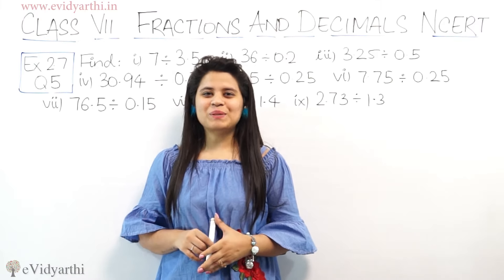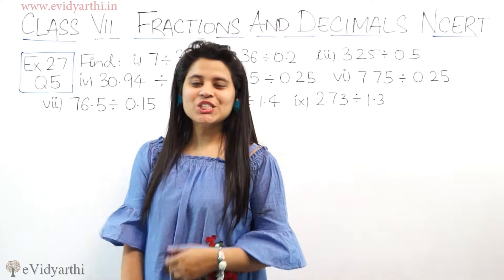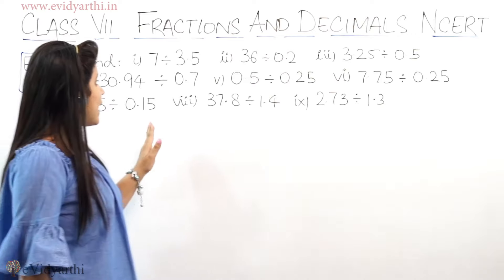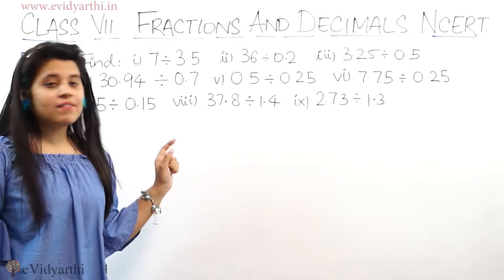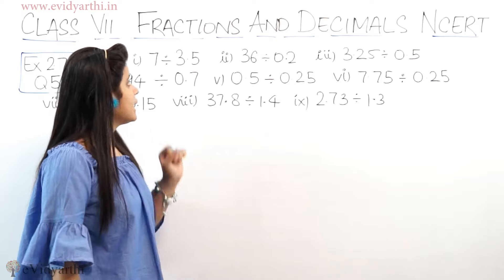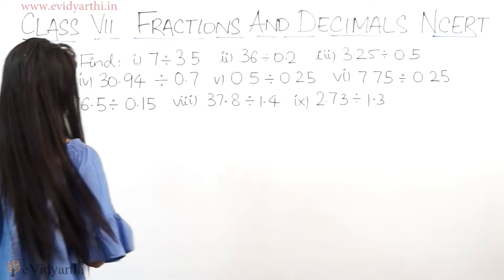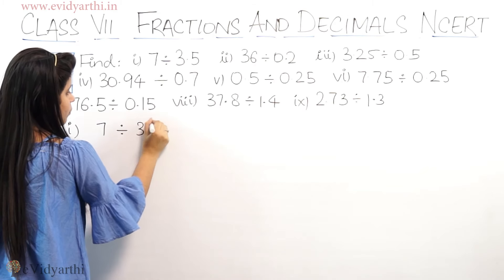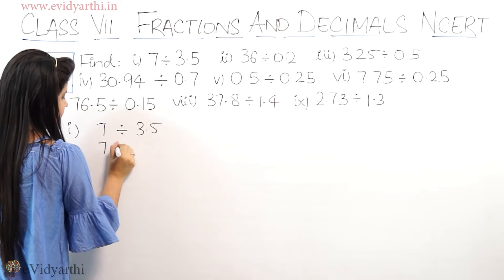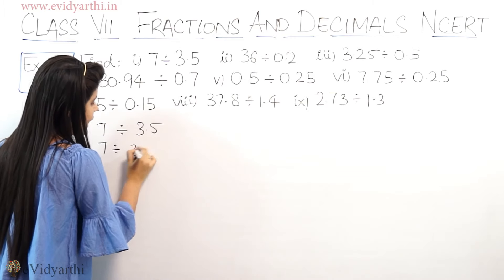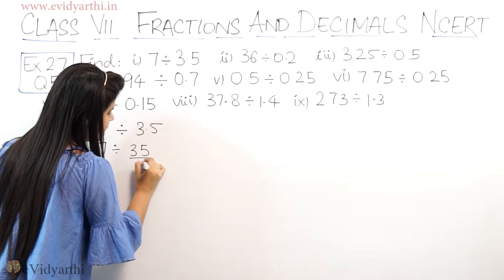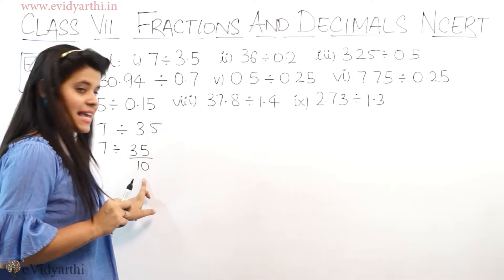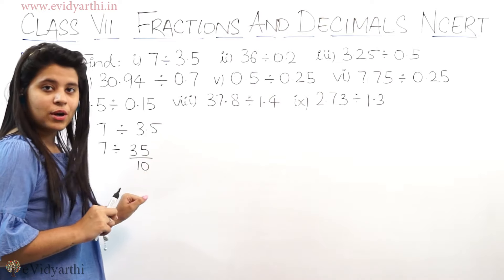Hello everyone, this is Mansi from Evidyati Tots. Let's start Question Number 5, Exercise 2.7. First part is 7 divided by 3.5. So let's start. 7 divided by 3.5 — I can write 3.5 as 35 upon 10, because the decimal means one zero, so you can write it as 35 upon 10.